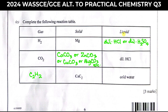You are given a table to complete involving solids, liquids, and gases — a reaction involving a solid and a liquid to produce a gas. The first row gives magnesium and the gas produced is hydrogen. Which liquid reacts with magnesium to produce hydrogen? It is an acid. It can be dilute hydrochloric acid or dilute H₂SO₄. Dilute HNO₃ can be tricky because not all metals react with it to produce hydrogen due to its strong oxidizing power. Magnesium can produce hydrogen with very dilute HNO₃, but to be safe, use only dilute HCl or dilute H₂SO₄.